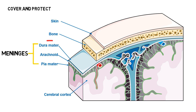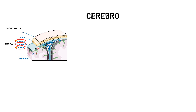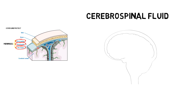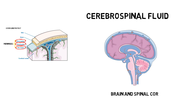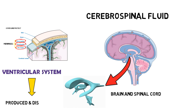From the outermost layer inward, they are dura mater, arachnoid and pia mater. Inside the brain there is a fluid called cerebrospinal fluid, which is found within the brain and surrounds the brain and spinal cord. The cerebrospinal fluid is secreted by the ventricular system and it is also distributed by it.